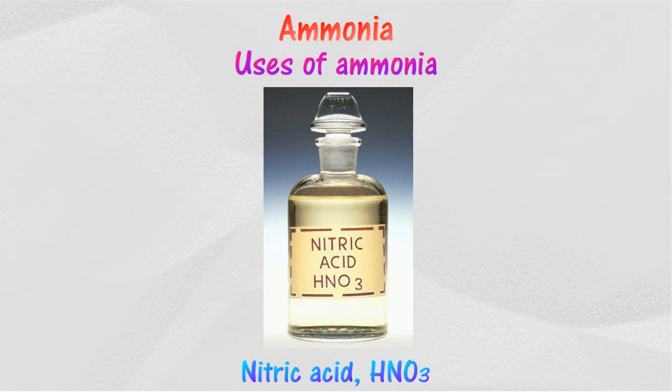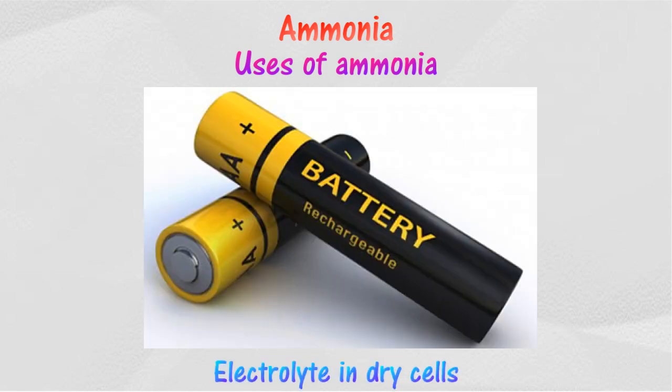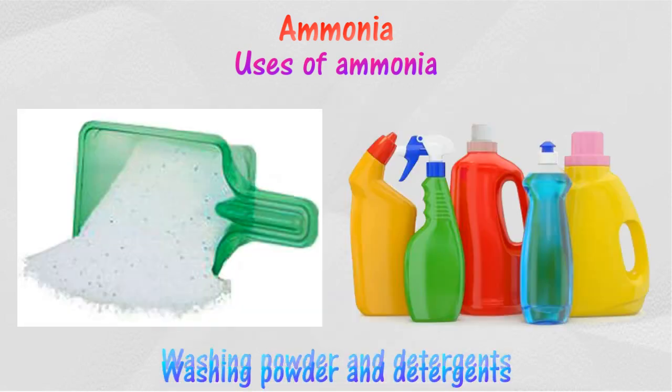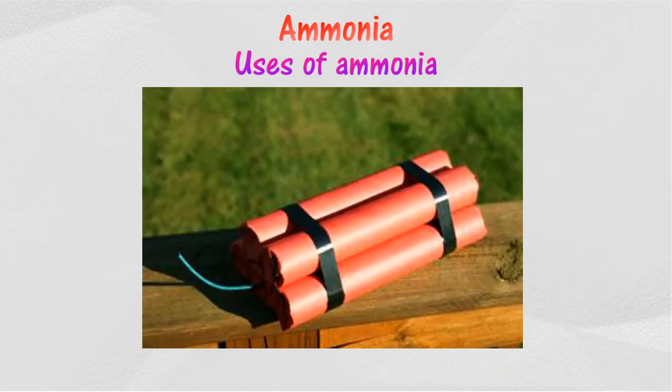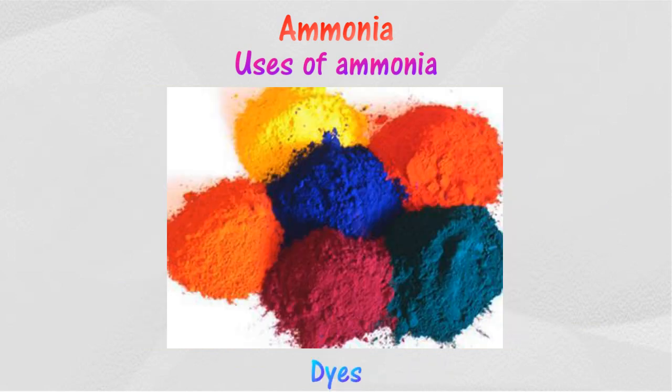Nitric acid can be produced through the oxidation of ammonia. Nitric acid is used to make plastics, pigments, and ammonium nitrate fertilizer. Ammonia is also used as an electrolyte in dry cells, and when ammonia solution reacts with plant oil, detergents are produced.